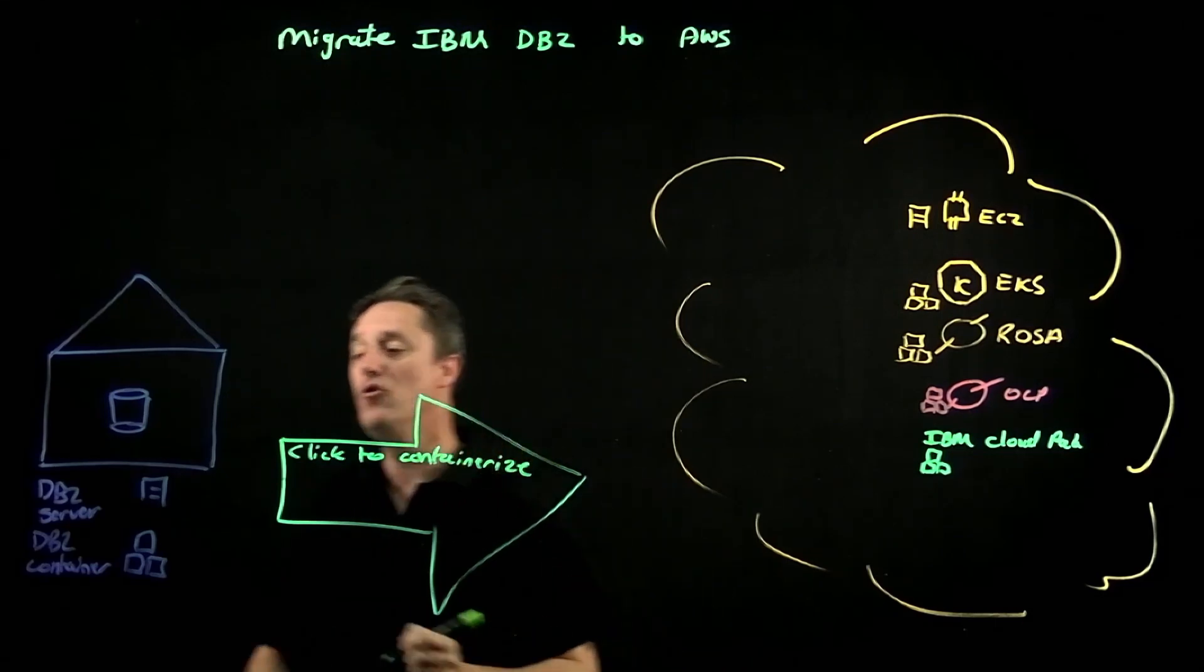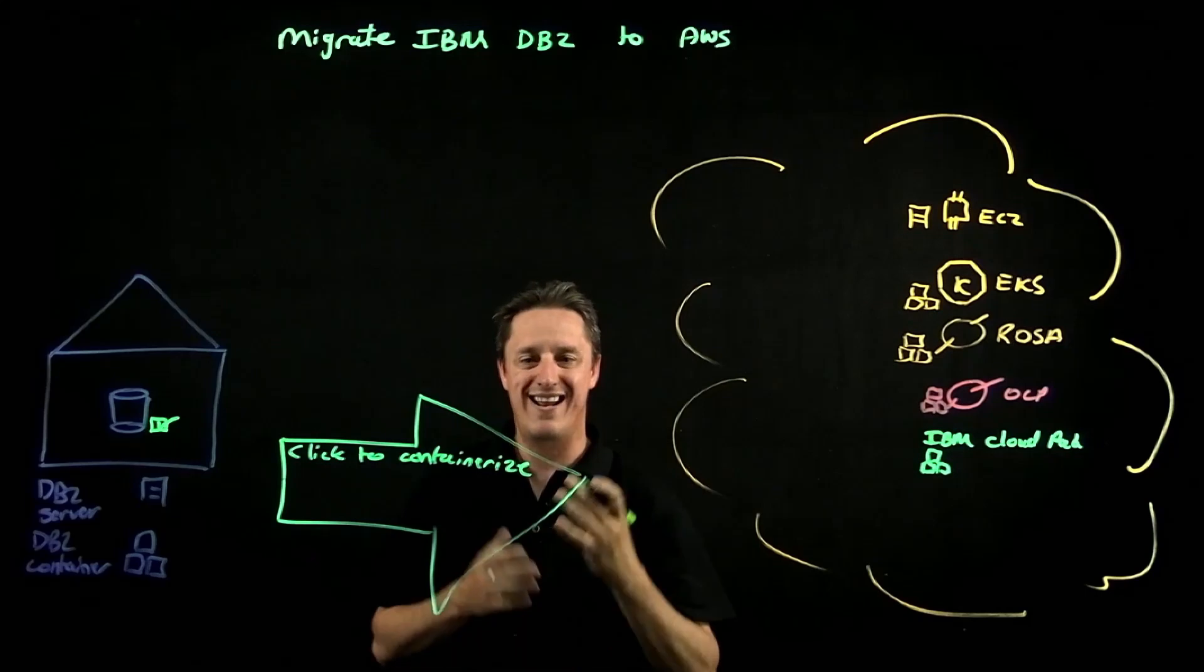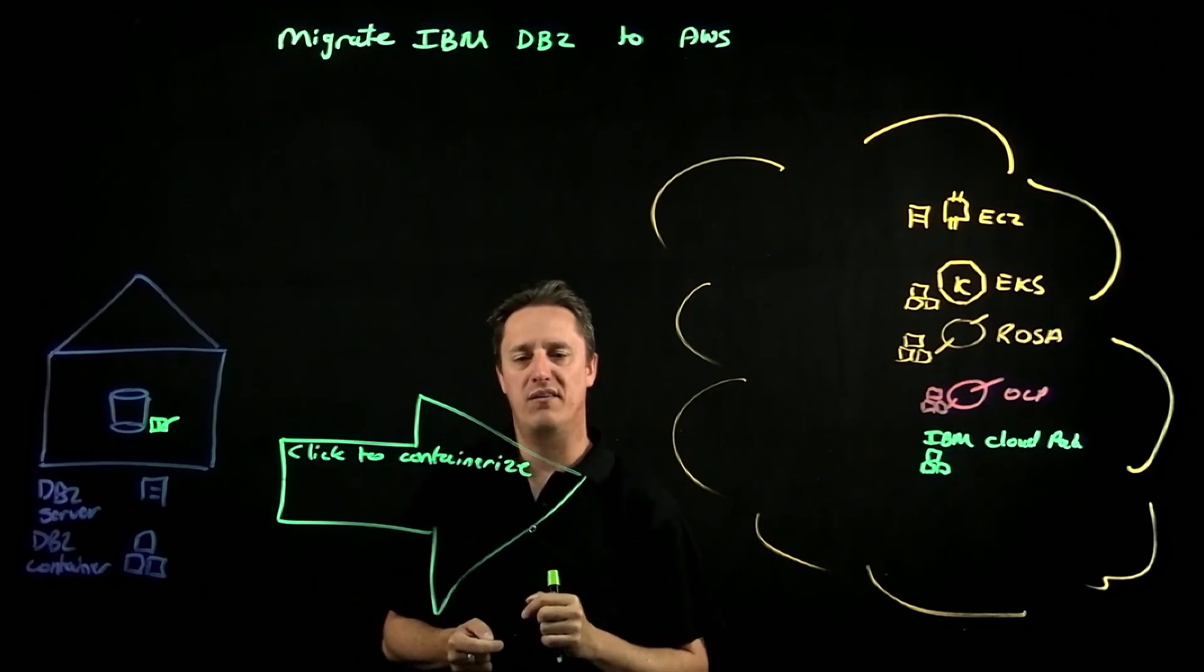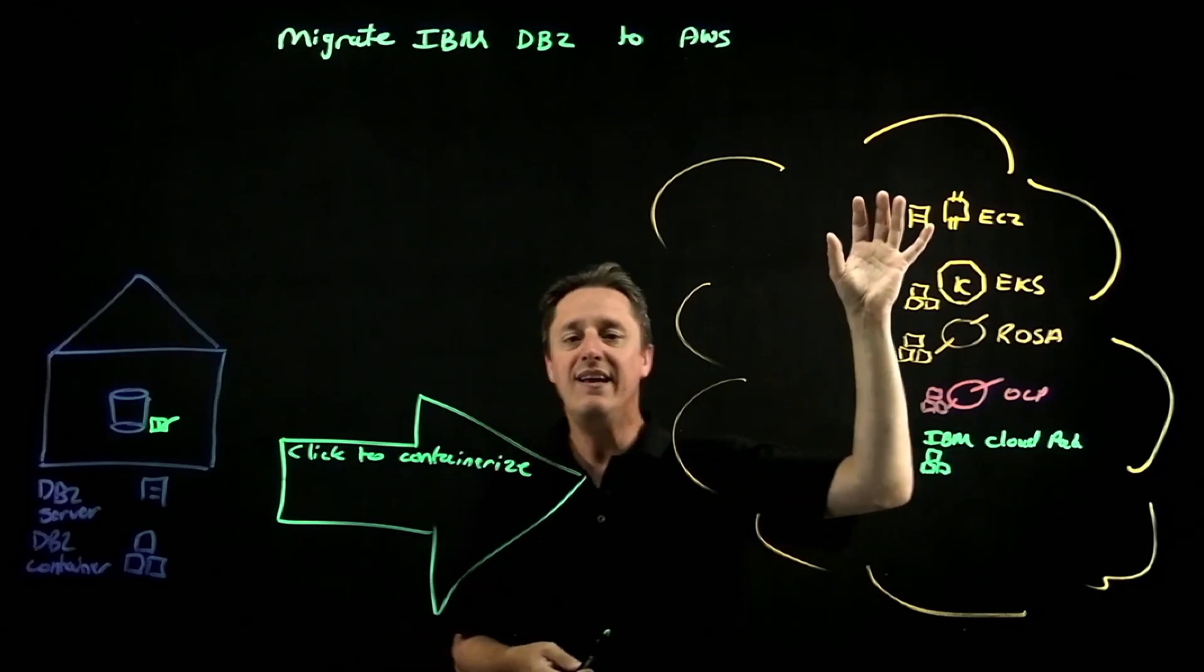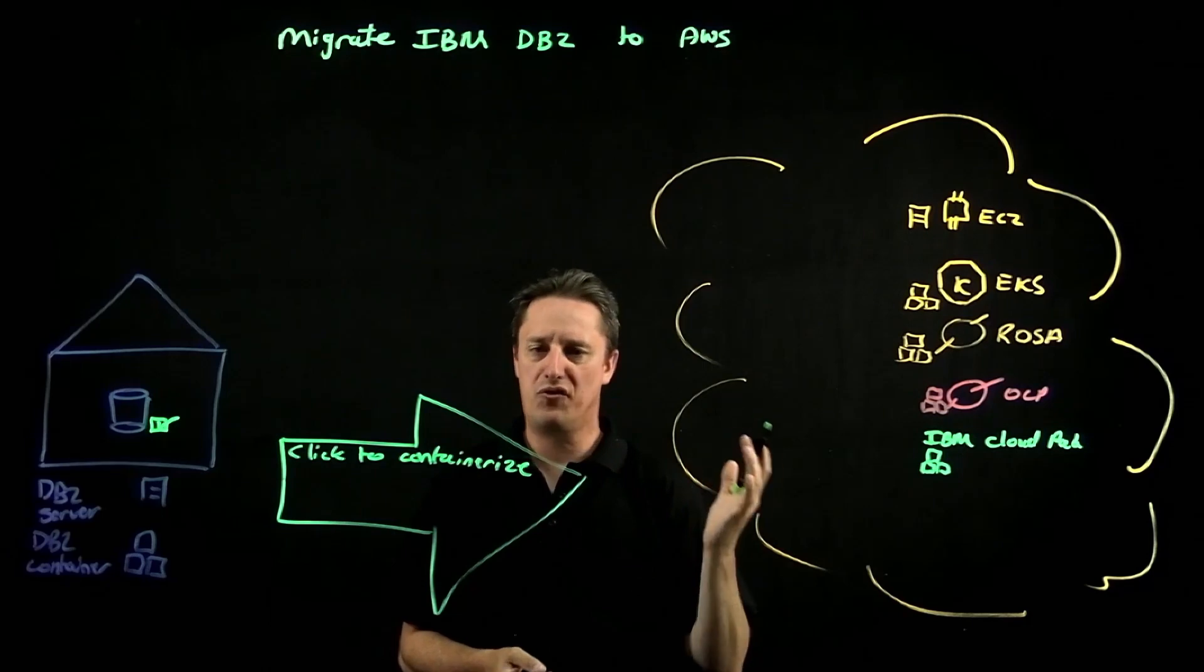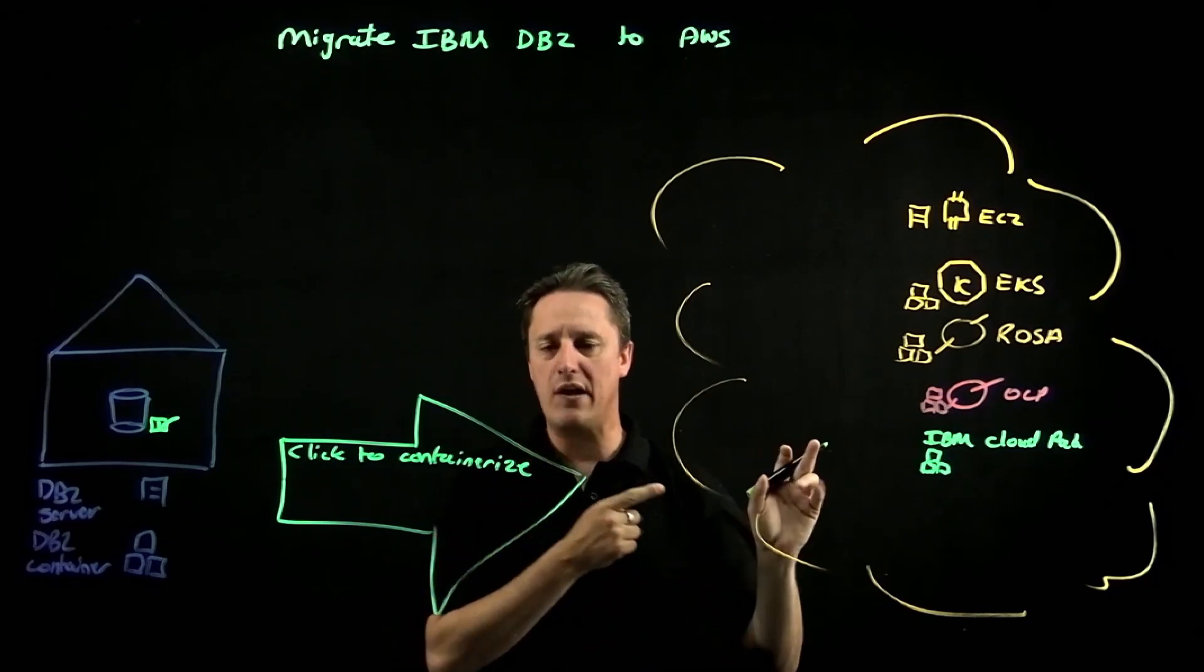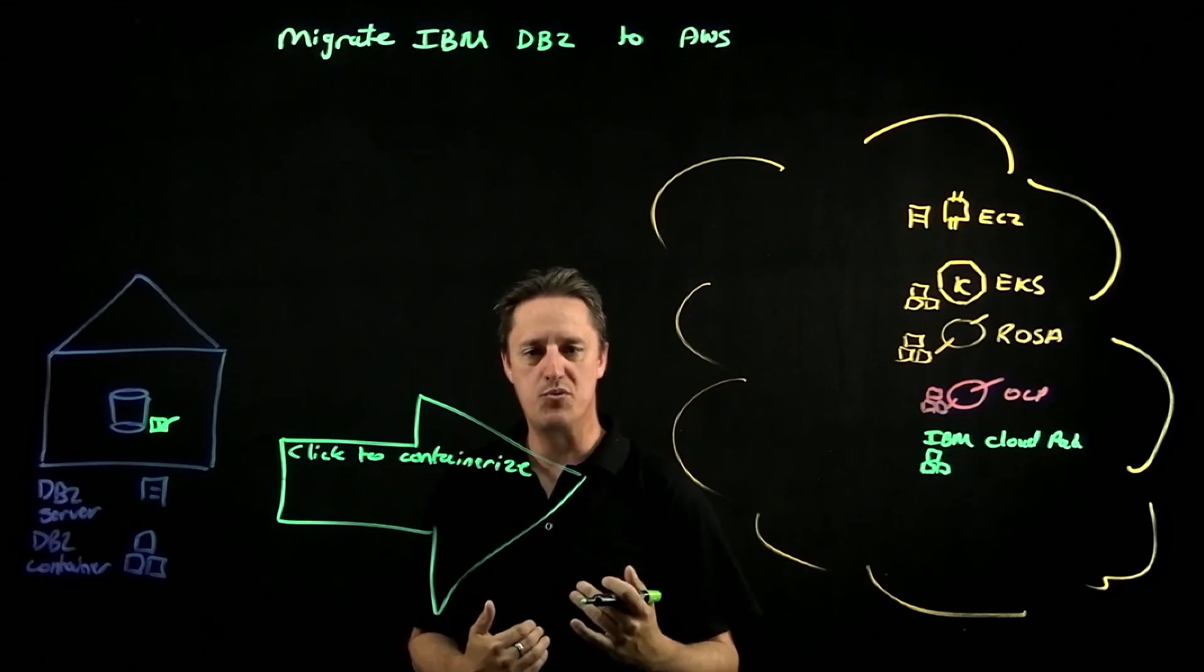Click2Containerize connects back to a source database. So you would connect it to your on-premises or wherever your source database is. You then go into Click2Containerize and you create a target. That target could be an EC2 instance if you just want to lift and shift the database. Or if it is a containerized workload, something like EKS or OpenShift, Click2Containerize can connect to that Kubernetes environment and actually build out the underlying Kubernetes objects.